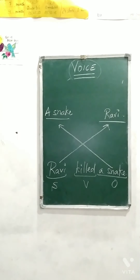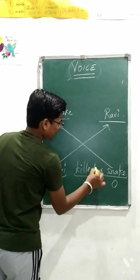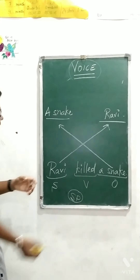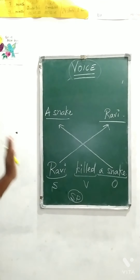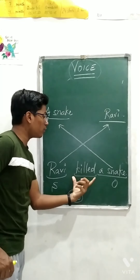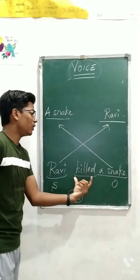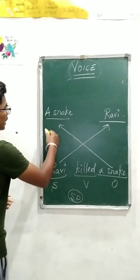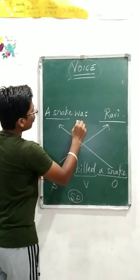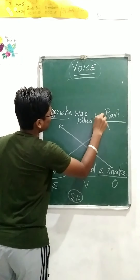What about the verb? There are particular formulas. This verb 'killed' is simple past. Just remember: when you are changing to passive voice, the verb will always remain in the third form. In passive voice the verb will remain in the third form. So we write: 'A snake was killed by...'